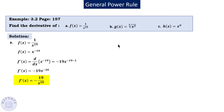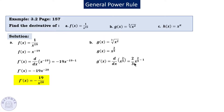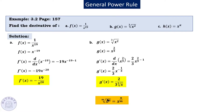For the next example, rewrite the radical as a power: x to the power of what's inside over the index of the radical, giving x to the power 2/3. Apply the power rule: 2/3 · x to the power (2/3 − 1) = 2/3 · x to the power −1/3. In general, x to the n under a radical of index m equals x to the power n/m.